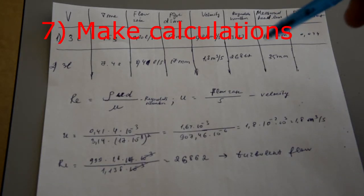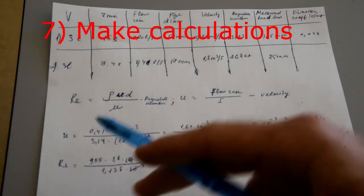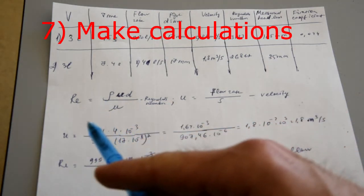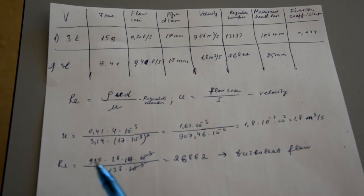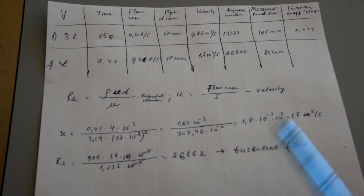Here is the example of how you have to fill the table and make your calculations using the formulas in the instruction manual. Here we have Reynolds number, and this number means that our flow is turbulent.